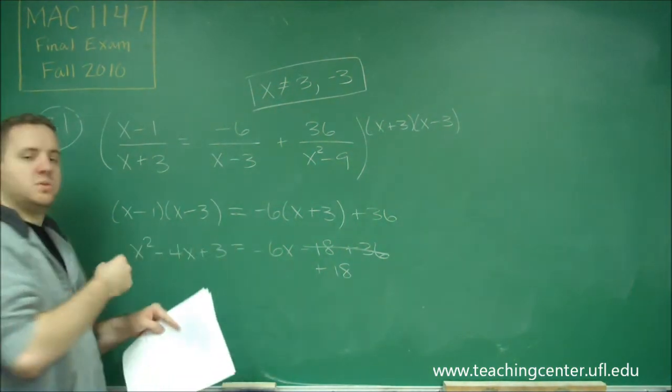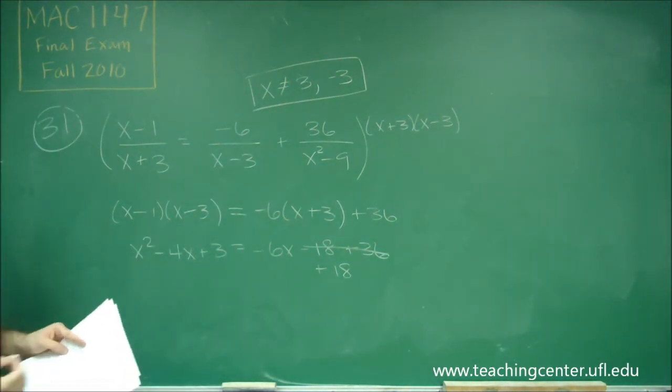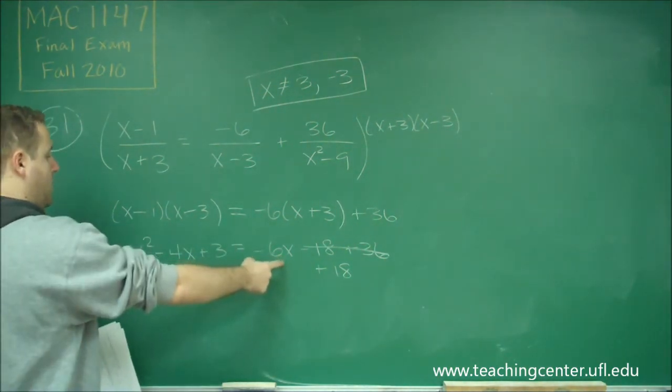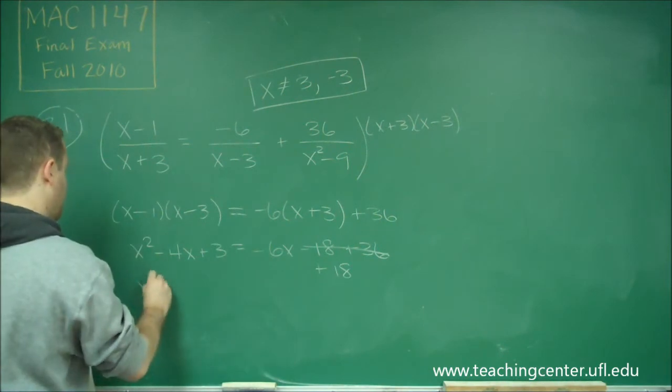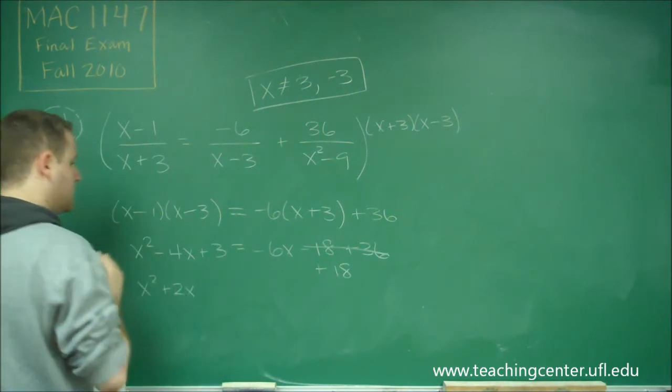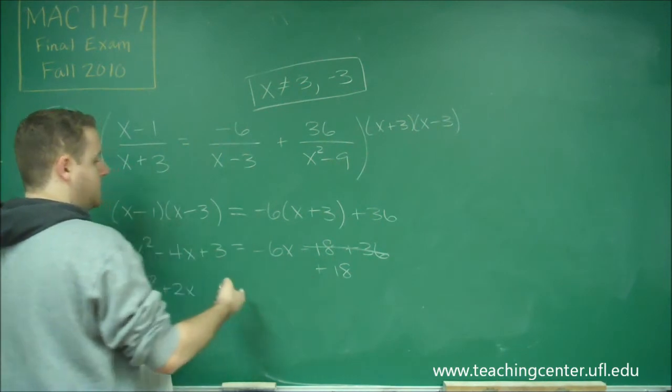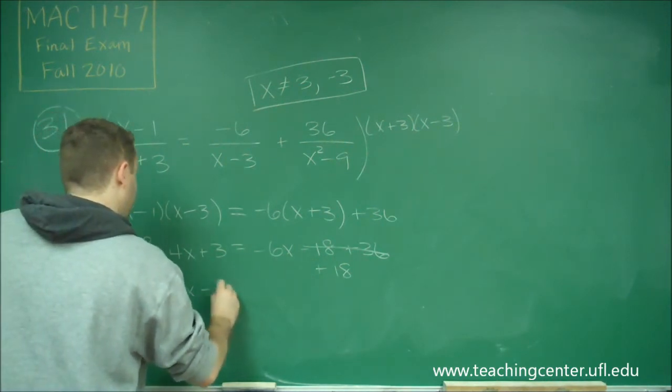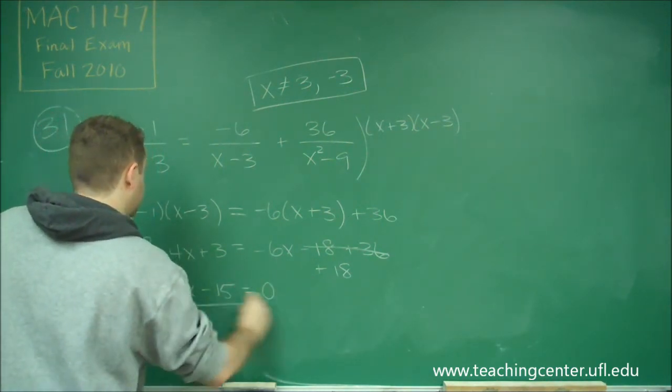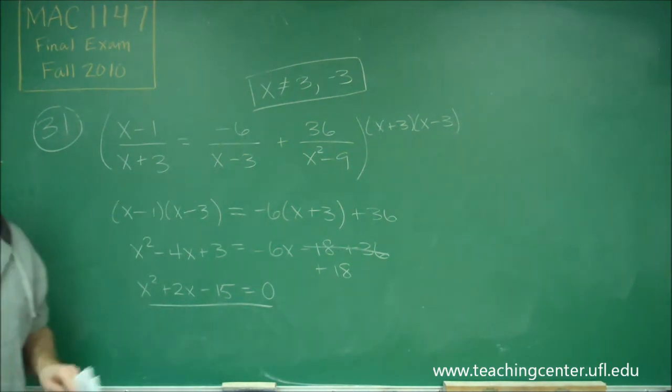And now we want to move everything over to one side so that we can factor out as easily as possible. If we add 6x over, that would become plus 2x. And if we subtract 18 over, we would get minus 15. So now we're down to a quadratic equation.